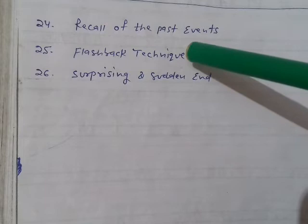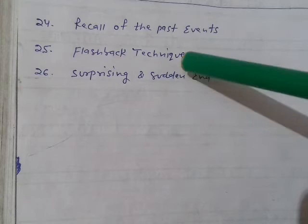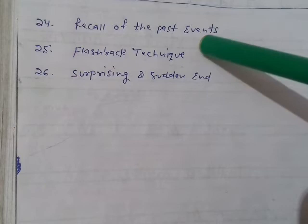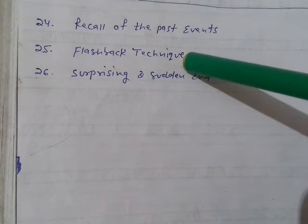The 24th point is recall — recall of the past events, because there is a lot of recall of past events or past incidents. The 25th one is flashback technique, because there is a recall of past events and she uses this technique. The last point may be a surprising ending — the readers find a lot of sudden and surprising moments. So all these were important points related to this story.